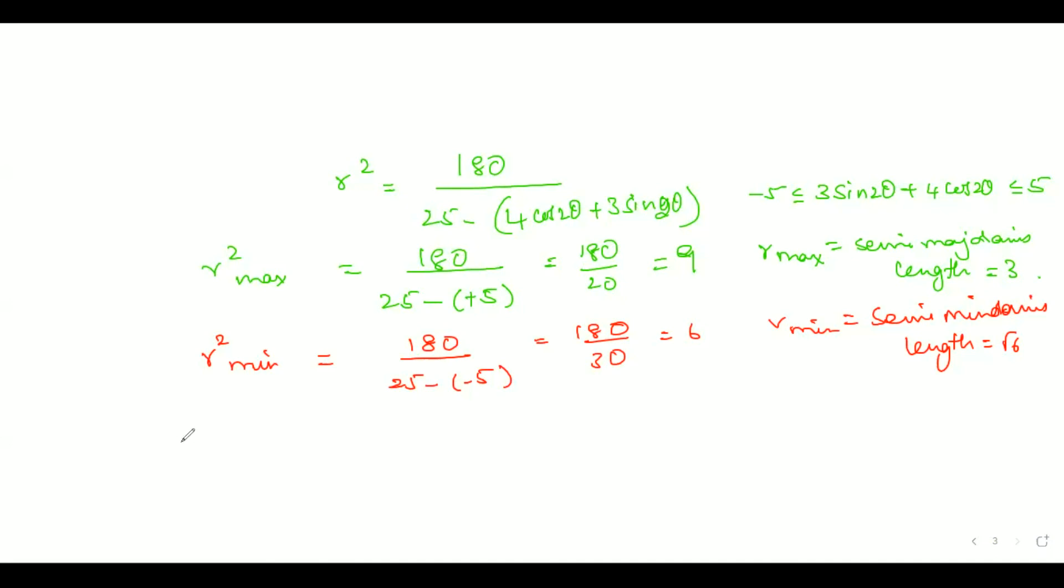In case if the question is further extended to find out director circle radius of this ellipse, because we already know the major axis length is 2a equals 6 here, director circle radius will be root of a squared plus b squared, which is going to be 3 root 2.